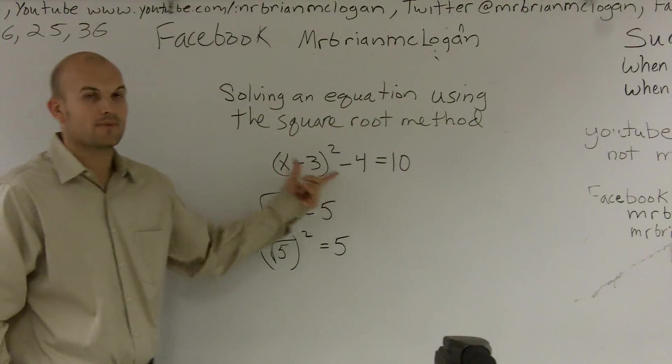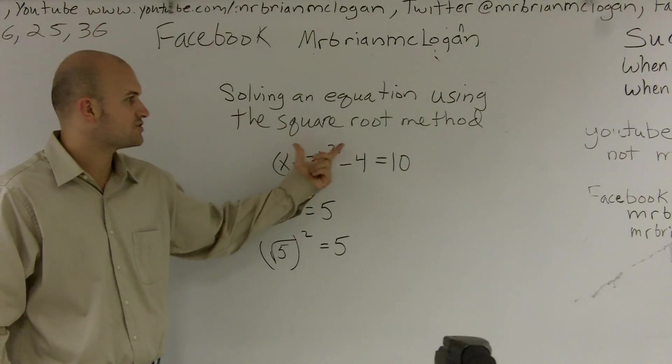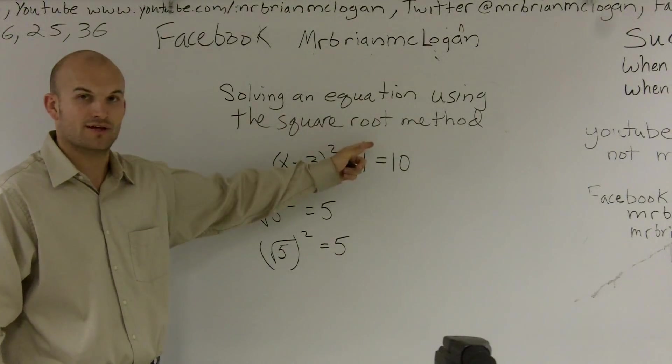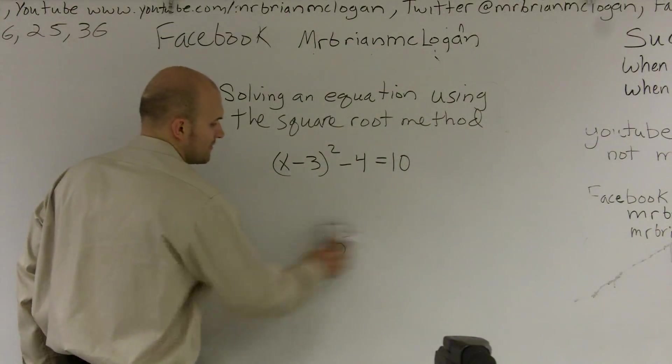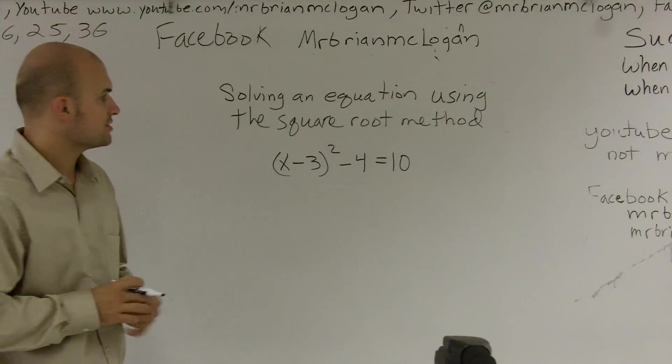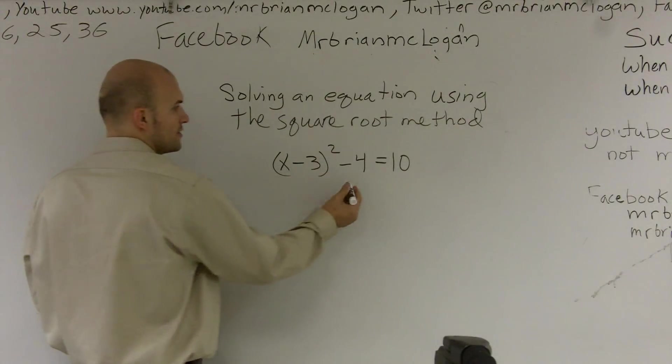So when I'm looking at this problem, the first thing I notice is I have this -4 over here. I can't just square, I can't take the square root of all this, because then I'm going to be taking the square root of -4, and that's going to mess me up. So the first thing, whenever you have a square, what you're going to want to do is isolate the square.